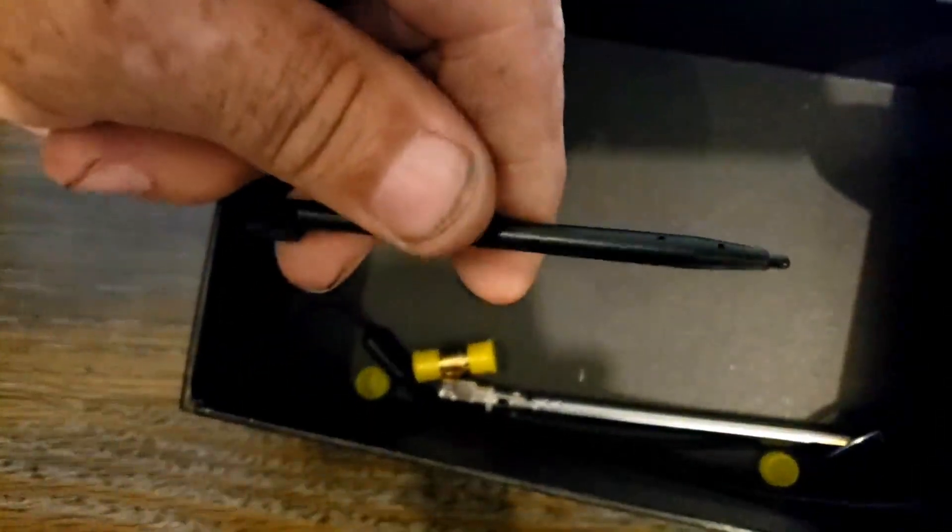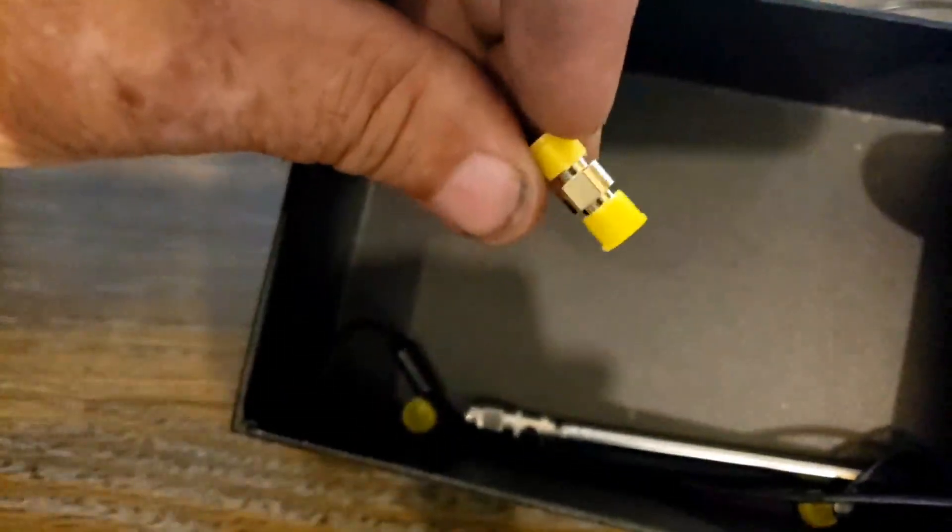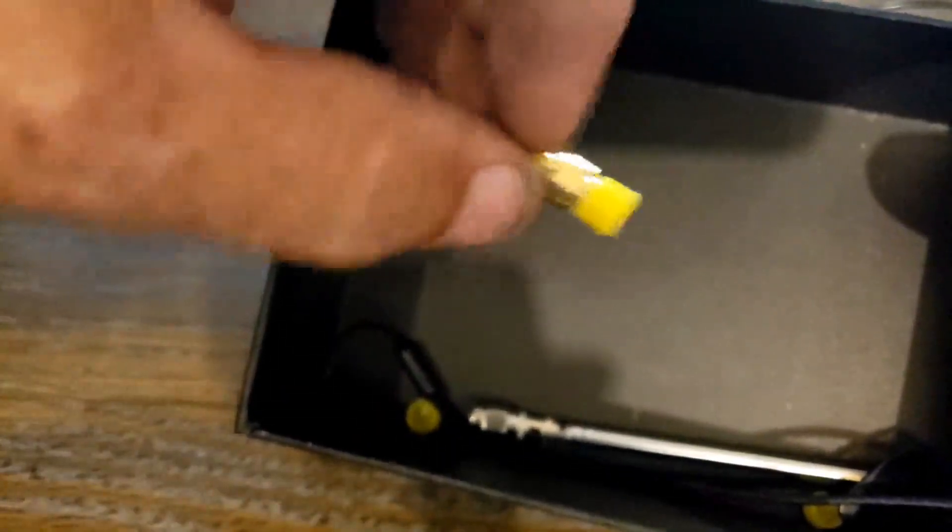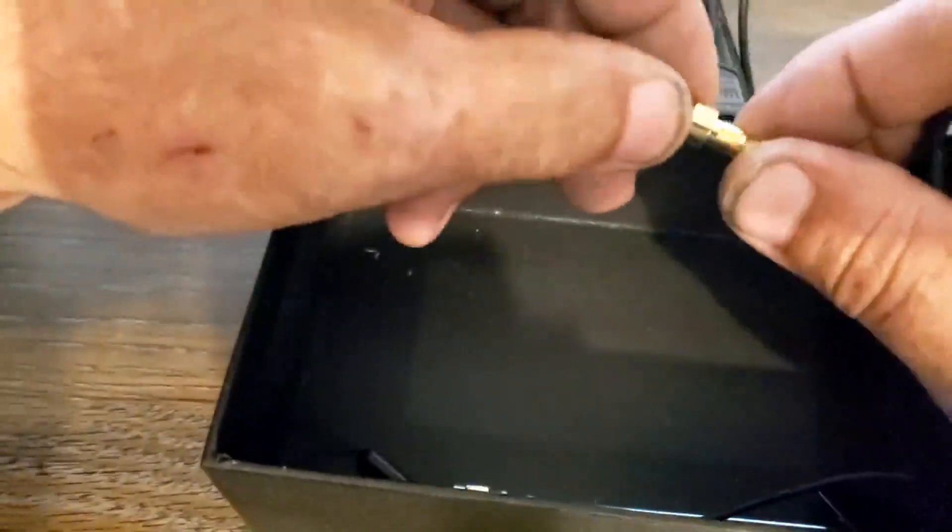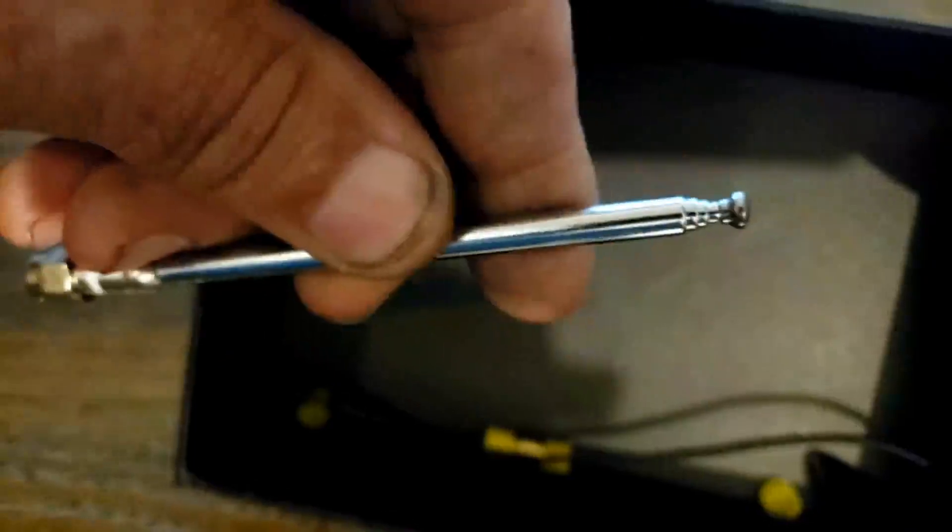We also have a stylus for the touch screen, which we're going to keep out also. We have a union to connect SMA cables together, this is female both ends, along with dust caps to keep it clean. We have an antenna which we're also going to take out of the box because we're going to use this telescopic antenna for what we're going to test.